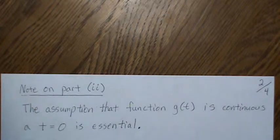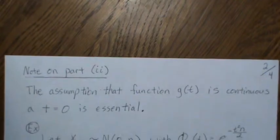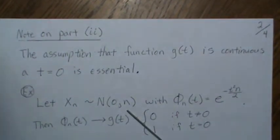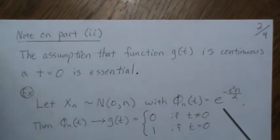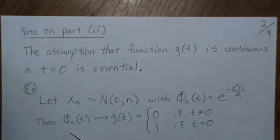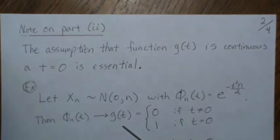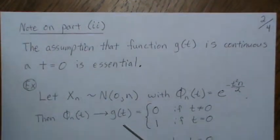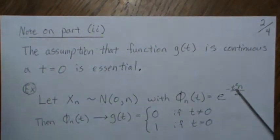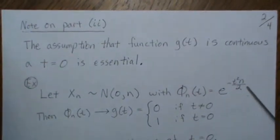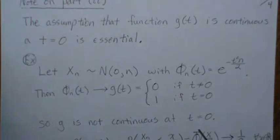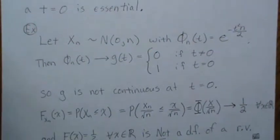We're going to omit the proof and just give an example. The assumption that g(t) is continuous at t equals zero is central, and here's an example why. Let Xn be normally distributed with variance n. Its characteristic function is e to the minus t-squared n over 2. As n goes to infinity, this converges to g(t), which equals zero when t is not zero, and one when t equals zero. So g is not continuous at t equals zero.